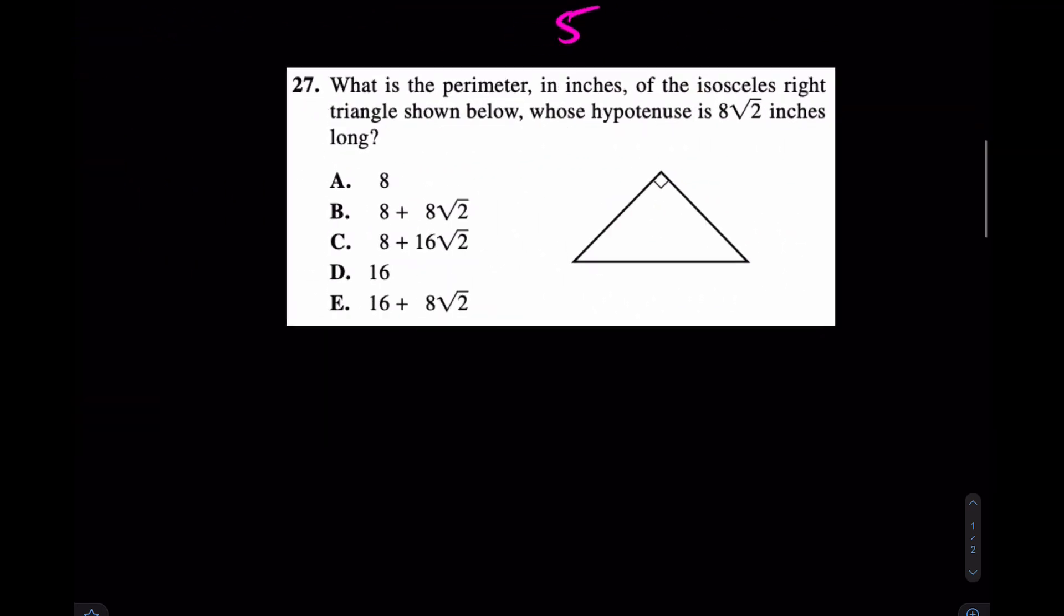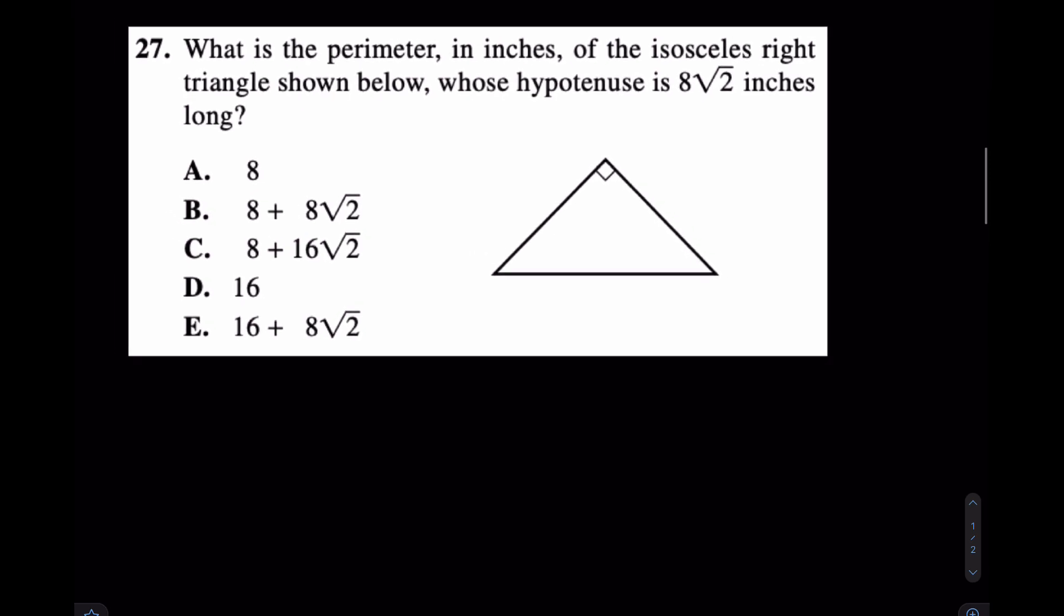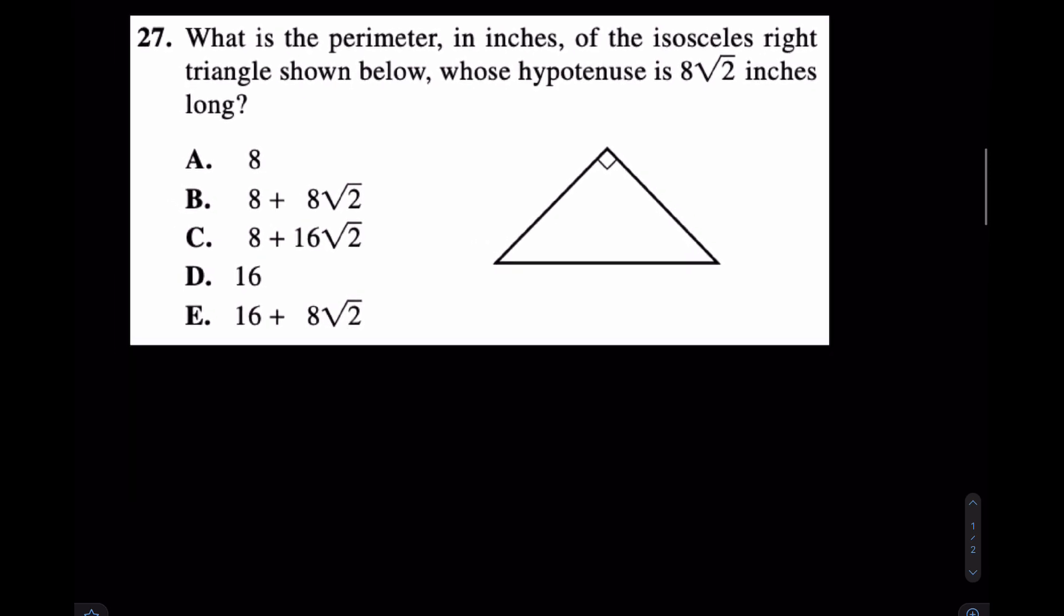Come over here for a 45-45-90 triangle. This is number 27 from a real ACT. This one doesn't really want the area. It wants the perimeter. Interesting. Well, if the hypotenuse is 8 root 2, and it does say that it's a right isosceles triangle, right isosceles, when does that ever happen? Well, that only happens if those two sides are the same. And that only happens if those two angles are the same.